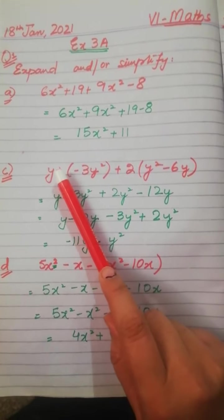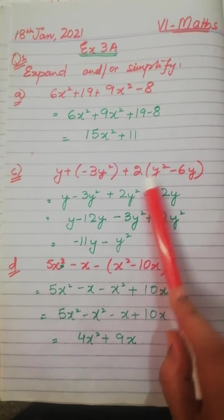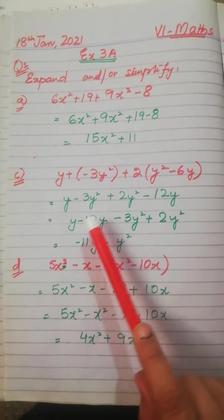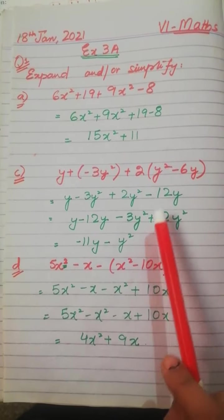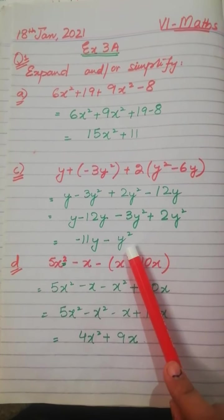Same इसी तरह इस question में y plus minus 3y² plus 2 multiply होगा y² से तो 2y² minus 2, 6, 12y. Again, y² और y² को आपस में solve करेंगे और y और y को आपस में solve करेंगे तो हमारे पास answer आजाएगा.